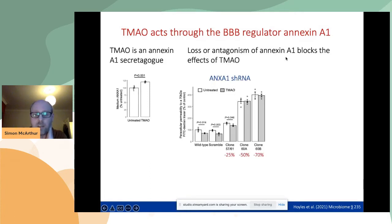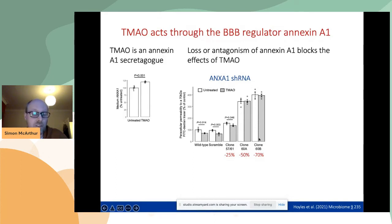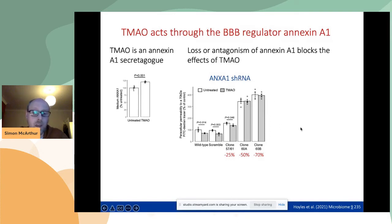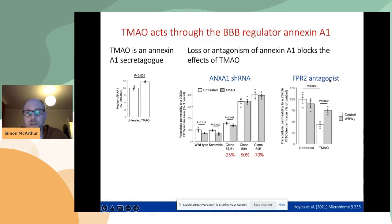If we block annexin1 actions by knocking it down with short hairpin RNA, we prevent the effects of TMAO. In a wild-type cell, TMAO reduces permeability to a tracer — not affected by a scramble sequence — but as we steadily knock down more annexin1, you lose the protective effect of TMAO. As an alternative, we also applied an antagonist to the annexin1 receptor, and again this blocked the effects of TMAO. So TMAO seems to be working through annexin1 to promote blood-brain barrier function.